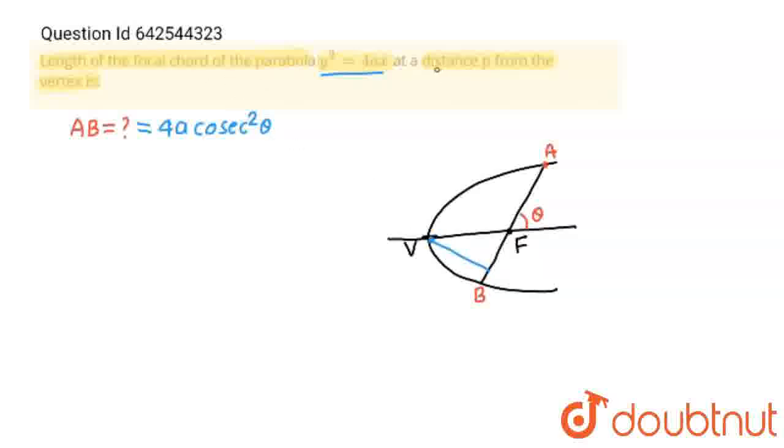And according to the question, this focal chord is at distance p from the vertex. It means this perpendicular distance p is given. Now I am going to consider this point M. So this is perpendicular, so this is 90 degrees. So I am going to draw that triangle.